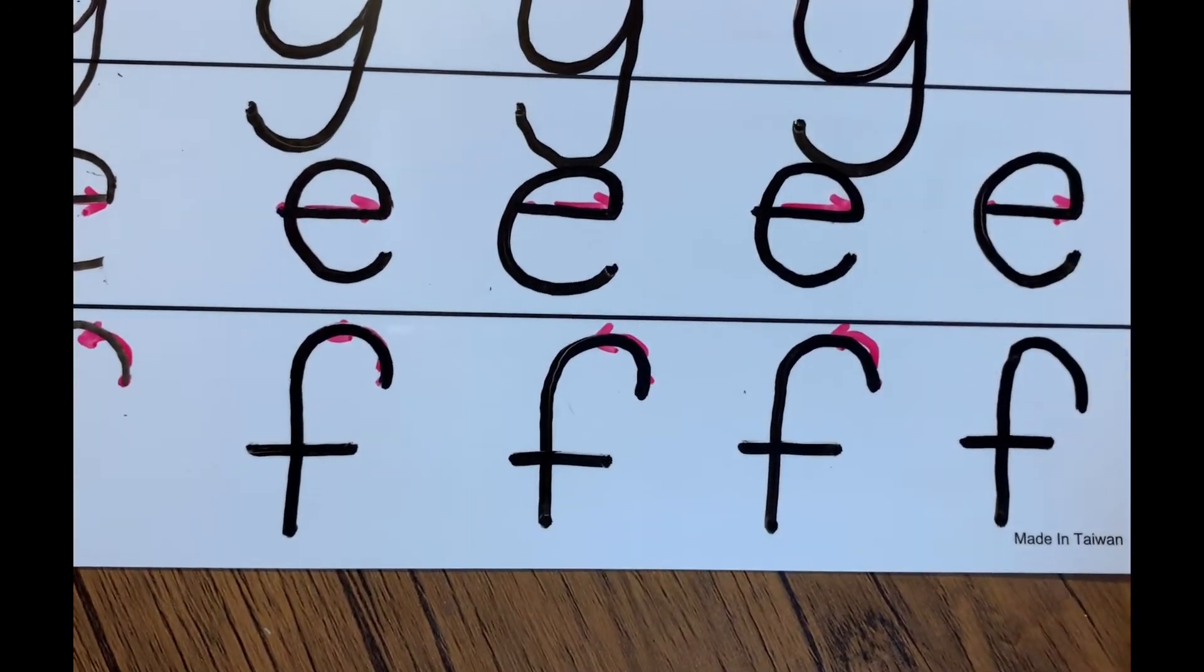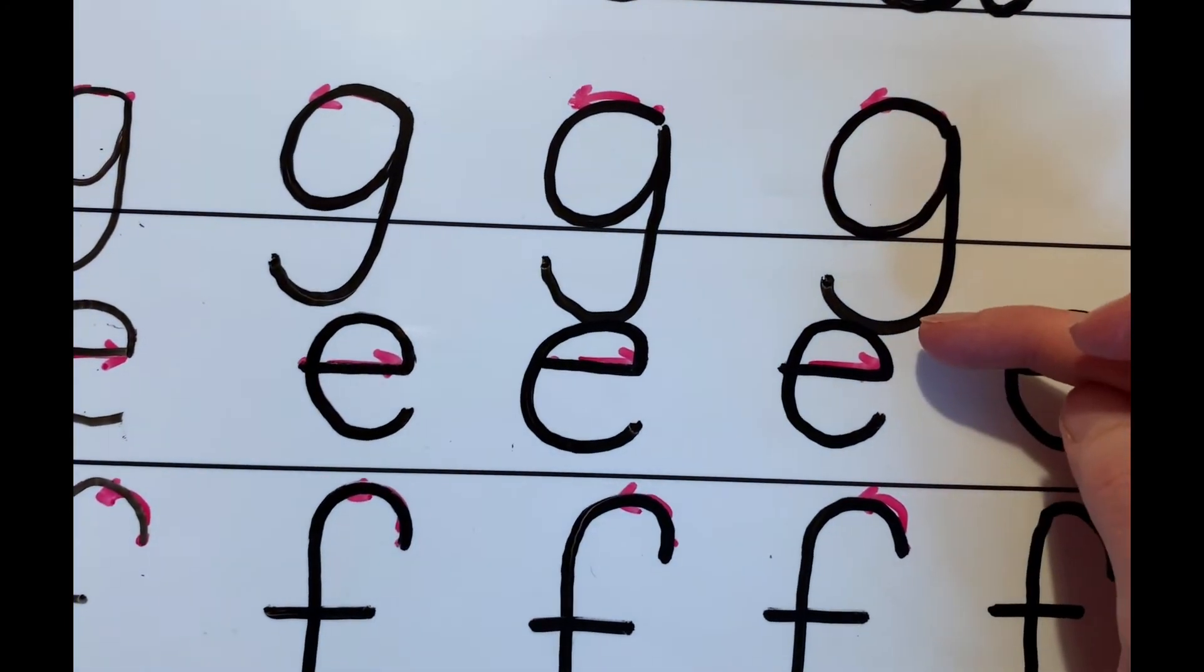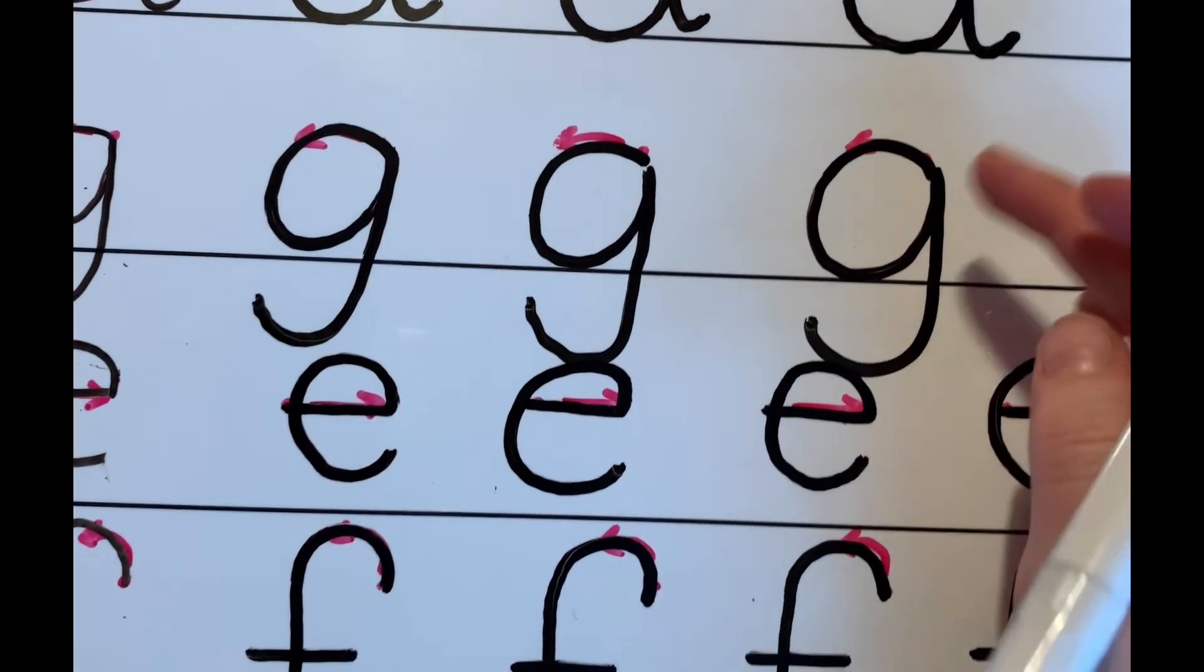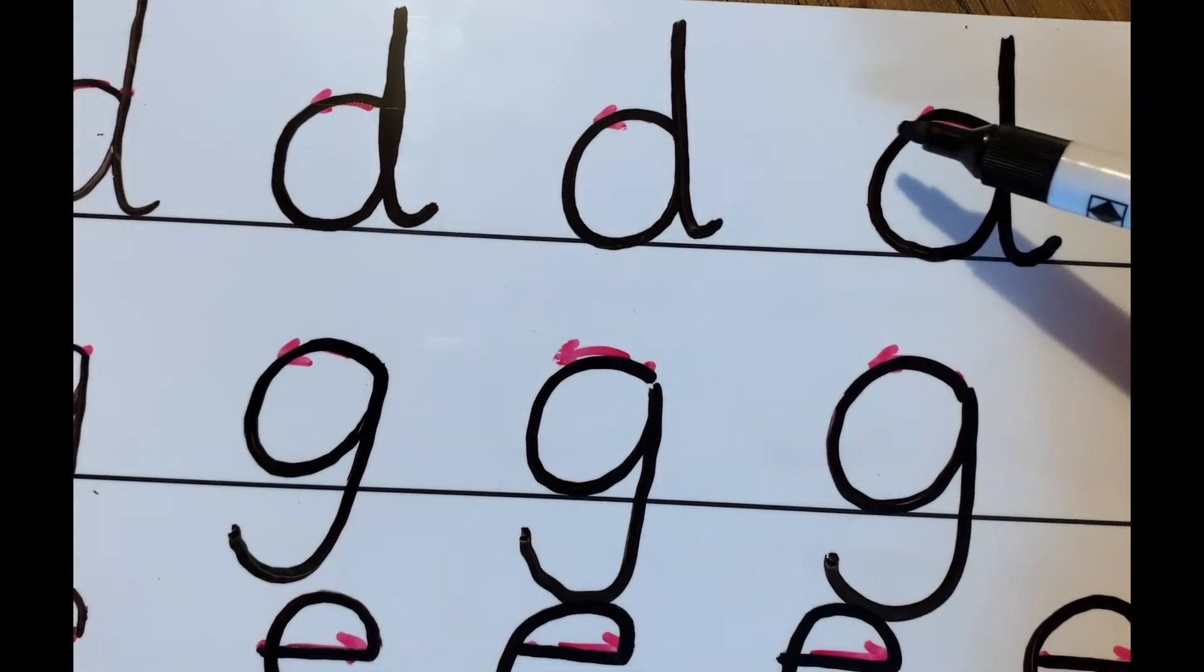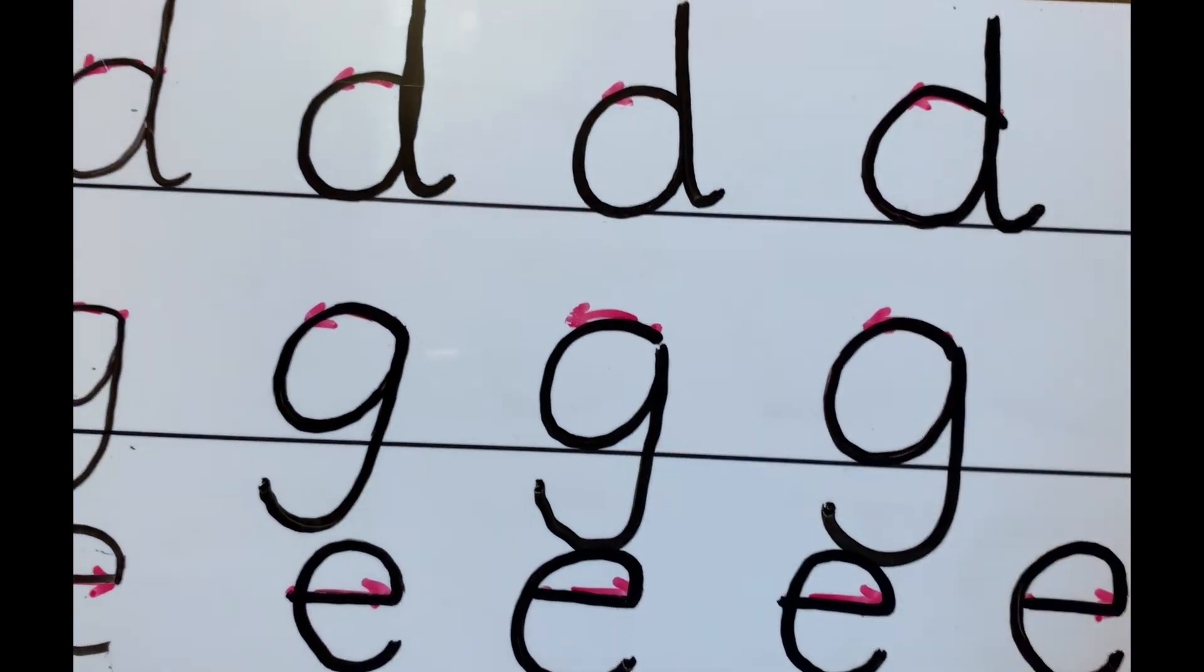E goes between the lines. G is a descender. It comes below the line, just like a p would. And also the d is an ascender. It sits on the line and goes above with his tall backbone.